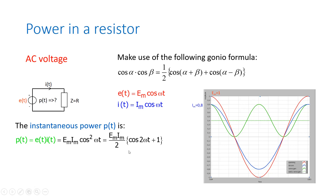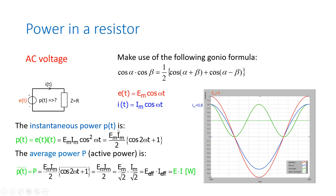We can also calculate the average power, which we saw over here as the dashed line — 0.4 watt in this example. By calculating the average power, we take the average value of this expression. The average power P, which is also called the active power, is equal to the average of Em times Im over 2, times the average of the cosine function. The average of a cosine is 0, and the average of 1 is 1, of course. So this leaves us with the average power P equal to Em times Im over 2.